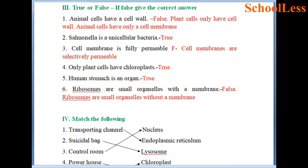Statement 2: Salmonella is a unicellular bacteria. We have seen in the lesson that Salmonella is a disease-causing bacteria. Therefore the answer is true. Statement 3: Cell membrane is fully permeable — this is false because cell membranes are only selectively permeable. Statement 4: Only plant cells have chloroplasts — this is true.